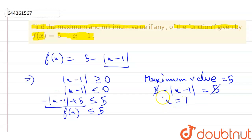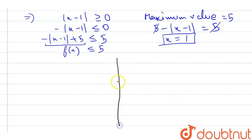This is the y-axis and this is the x-axis. The value at x = 1 is 5, the maximum value. This point is (1, 5). As it is modulus, this line should be